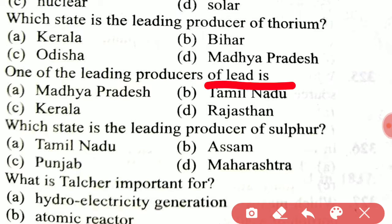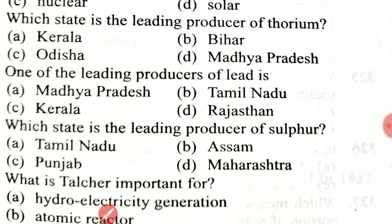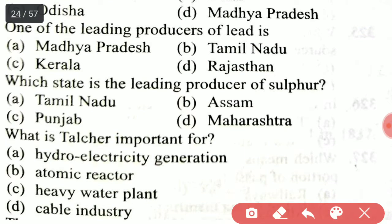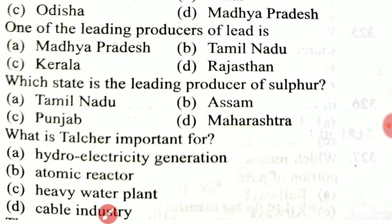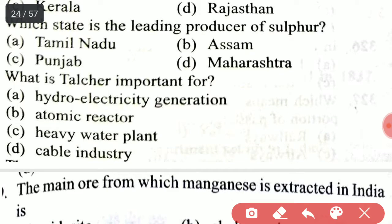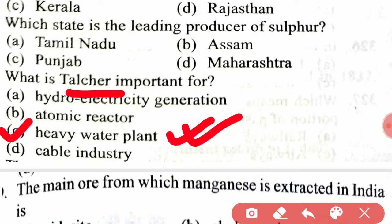Which is the leading producer of lead? The answer is option D, Rajasthan. Which state is the leading producer of sulfur? It is Tamil Nadu. What is Tuticorin important for? Option C is the right answer: heavy water plant.